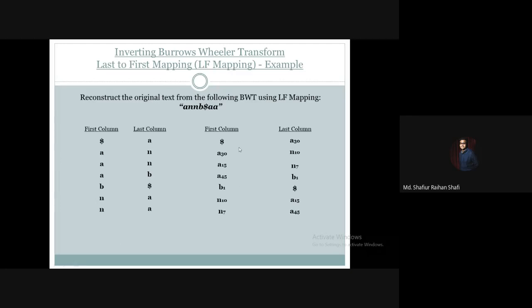So what we have to do is apply the numbering. In the first column, first row, we have the dollar sign. This dollar sign in the last column corresponds to a character — we need to find which character. The numbering tells us: first column, first row corresponds to A30 in the last column. This information helps us reconstruct the original text, whose last character we recover this way.